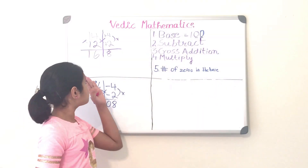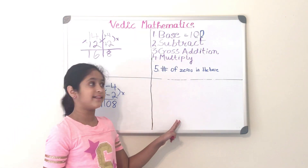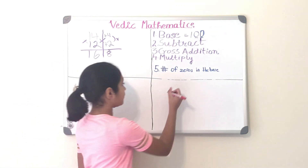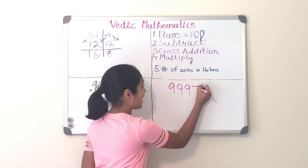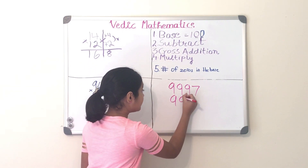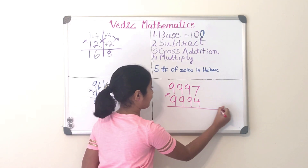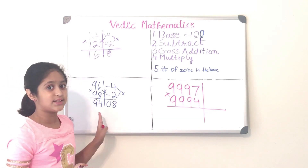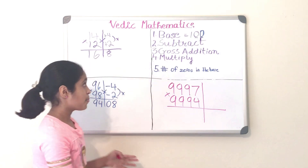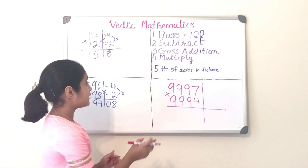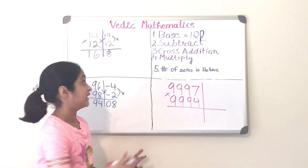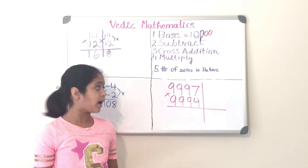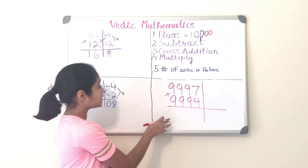In the previous two problems we multiplied two-digit numbers, but now let's multiply some bigger numbers. How about 9,997 times 9,994? Don't be scared — it's not going to be that tough because we're using the base method. Step one: determine the base. In this problem it's going to be 10,000.